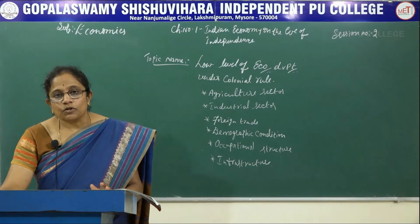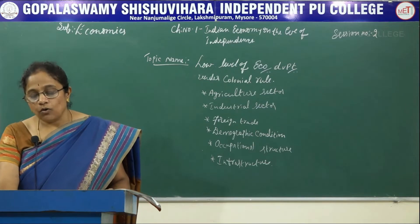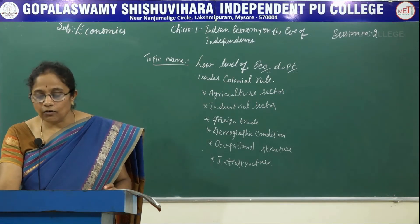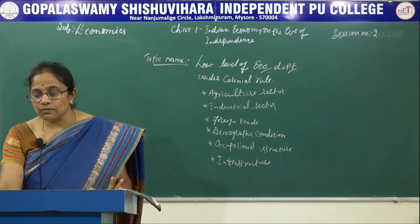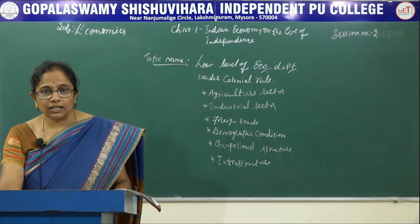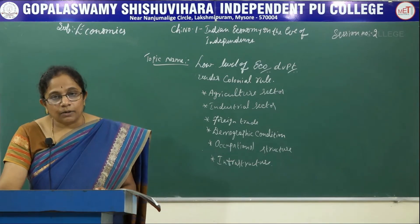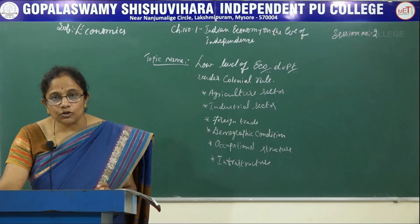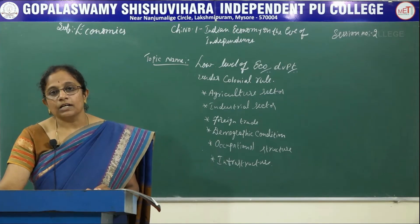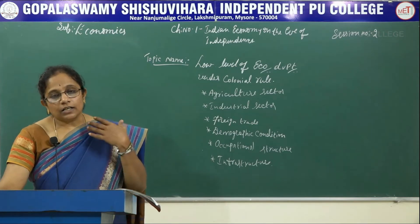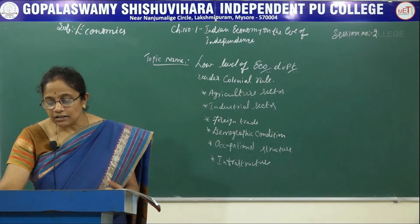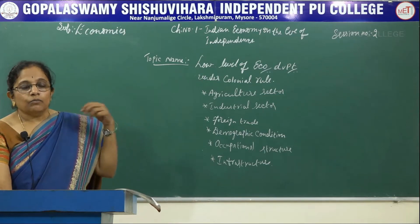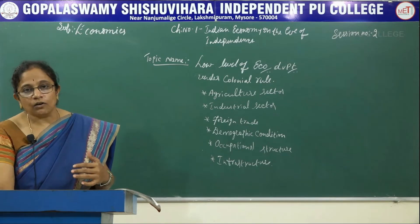They had the concept of protecting economic interests of their home country and they did not take any initiative to improve the Indian economy. Colonial government did not make any attempt to estimate the national income or per capita income. Indian people like Dadabai Navroji, VKRV Rao and RC Desai made some attempt to know about the national income and per capita income. In this effort, VKRV Rao's estimates were very significant. Now let us come to the failures of the Indian economy in moving towards progress because of the efforts of this colonial government.